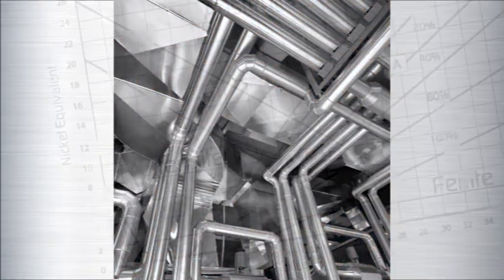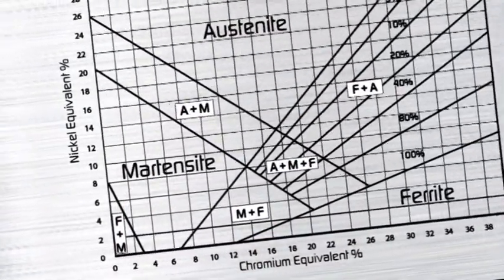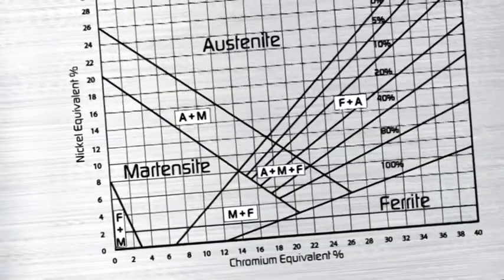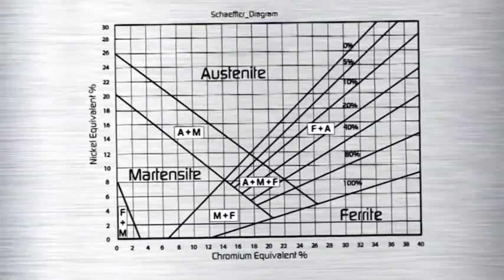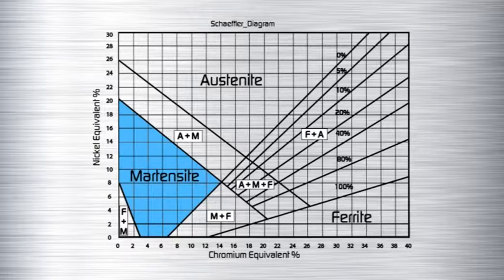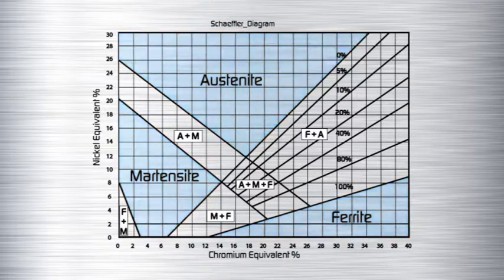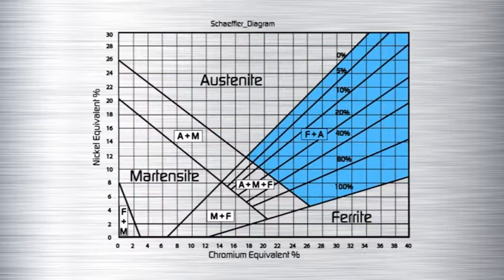The Schaeffler diagram reveals that, depending on the precise levels of chromium and nickel, it is possible to produce steels which are martensitic, ferritic, austenitic, or indeed mixtures of ferrite and austenite, known as duplex stainless steels.